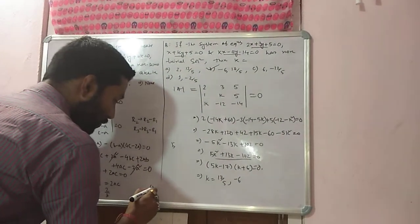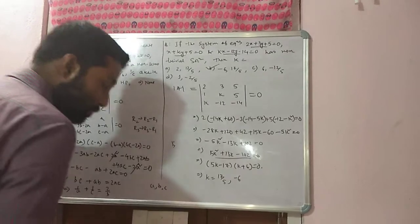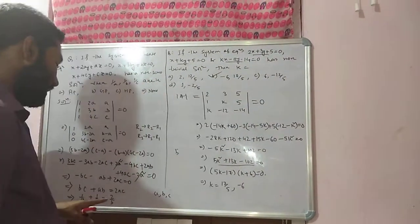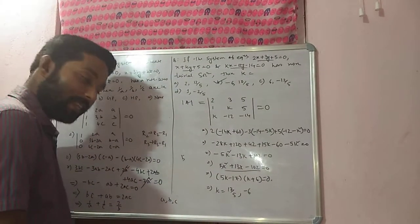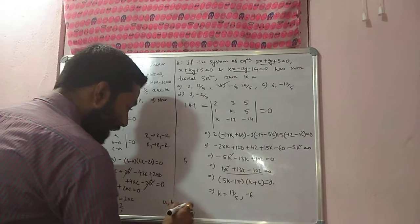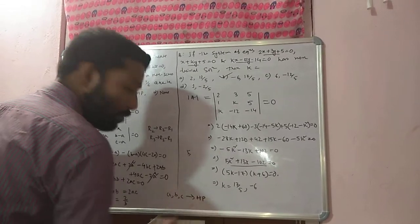We know if ABC are in HP, harmonic progression, then we can write twice 2 by B is equal to 1 by A plus 1 by C. That means here we can say that ABC are in harmonic progression.